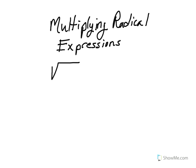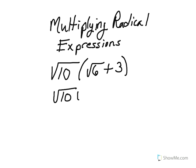Suppose we wanted to multiply the square root of 10 times the square root of 6 plus 3. We will use the distributive property to multiply the square root of 10 through the binomial. Then we would simplify using the things we've learned about how to multiply radicals in the previous sections.